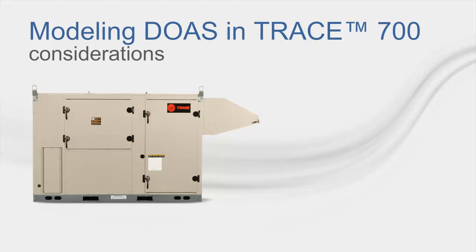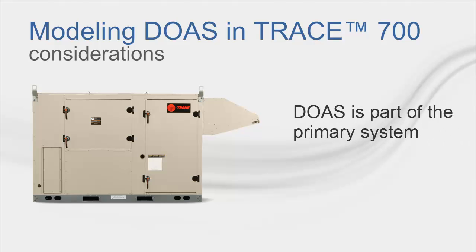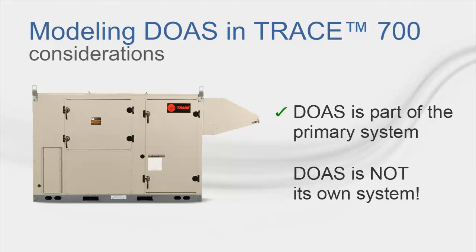Before we go into TRACE, I want to point out a couple of big-picture modeling considerations and limitations. First, when creating a system in TRACE 700 that utilizes a DOA, the DOA system is considered as being a part of the primary system. In other words, the DOA is not created as its own system. This will make more sense when we go into the program.